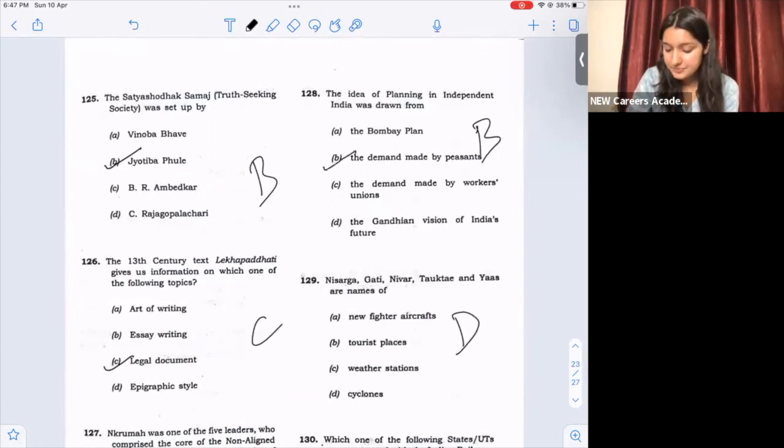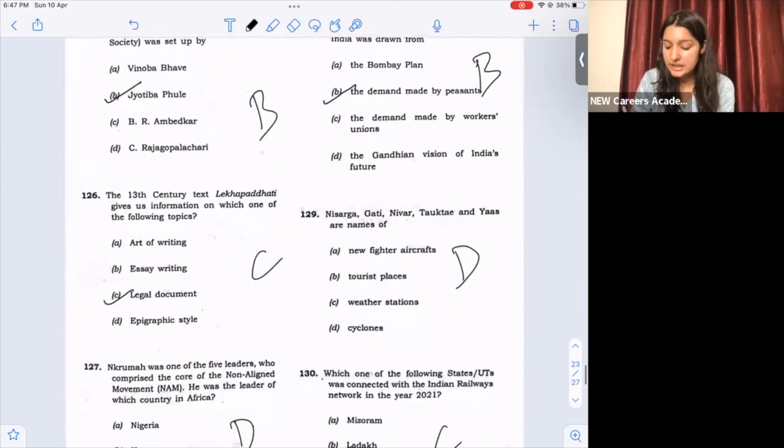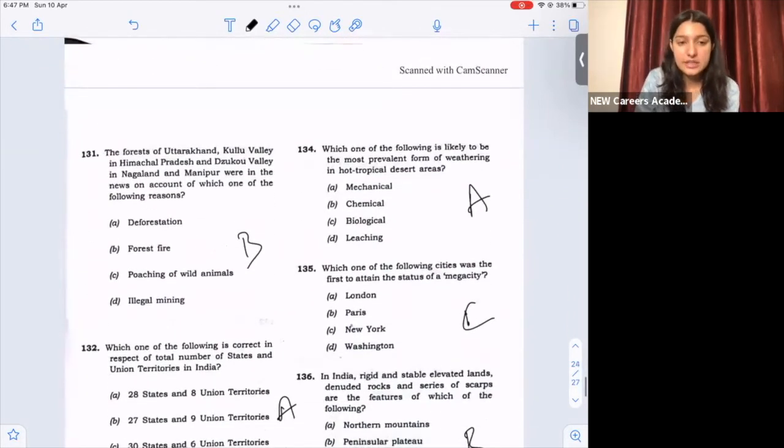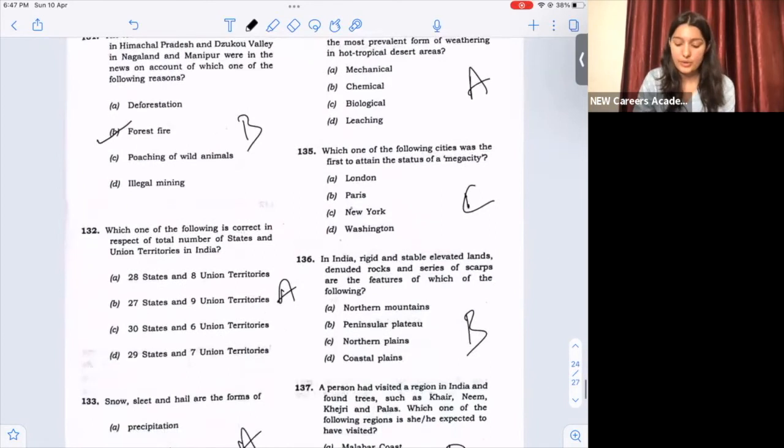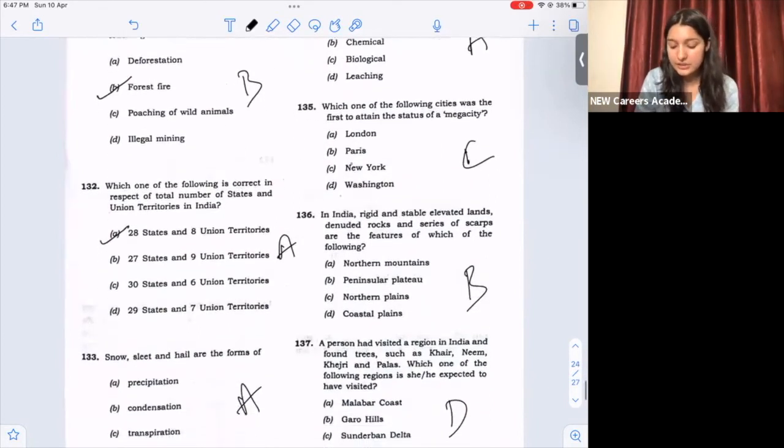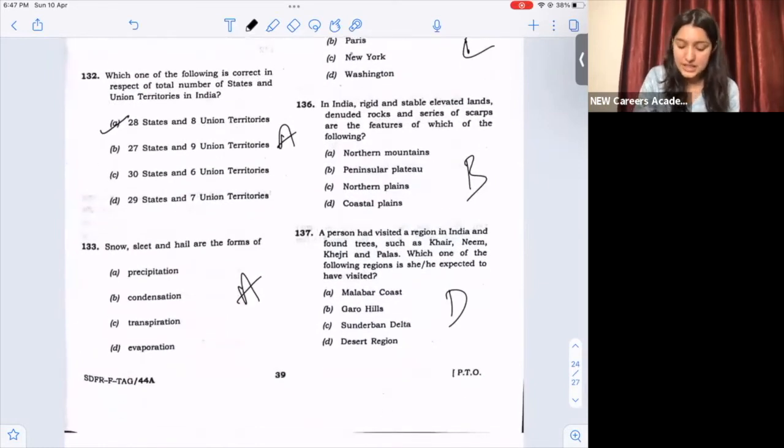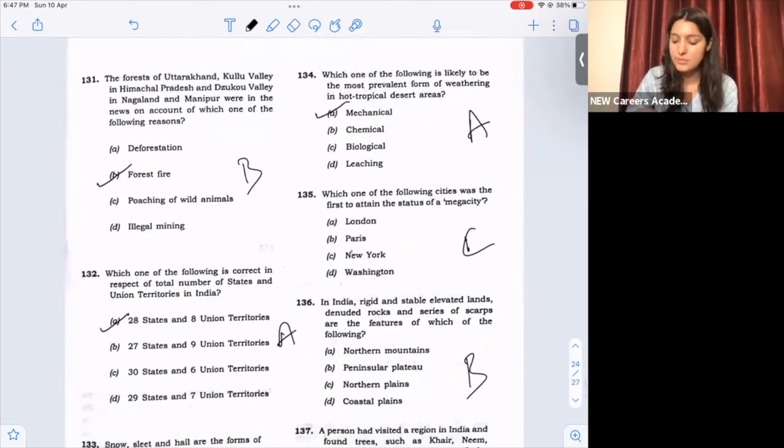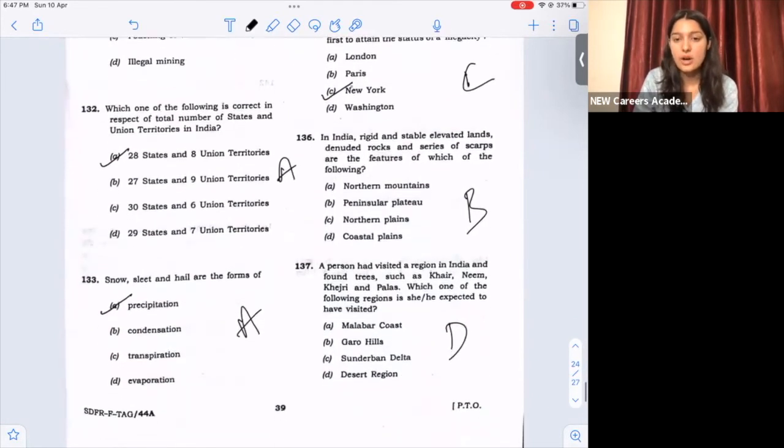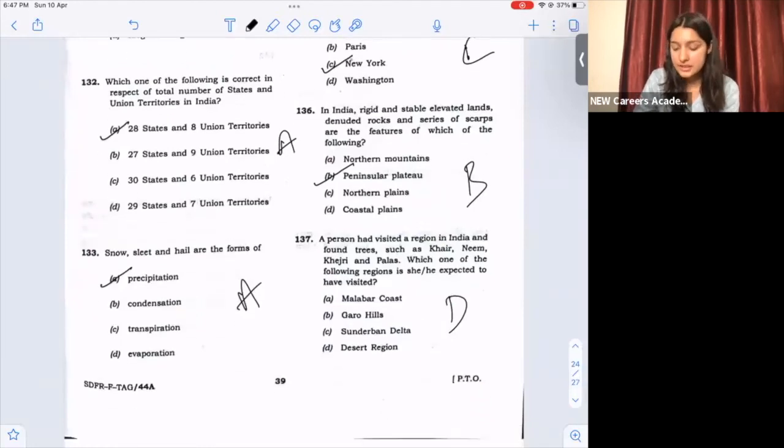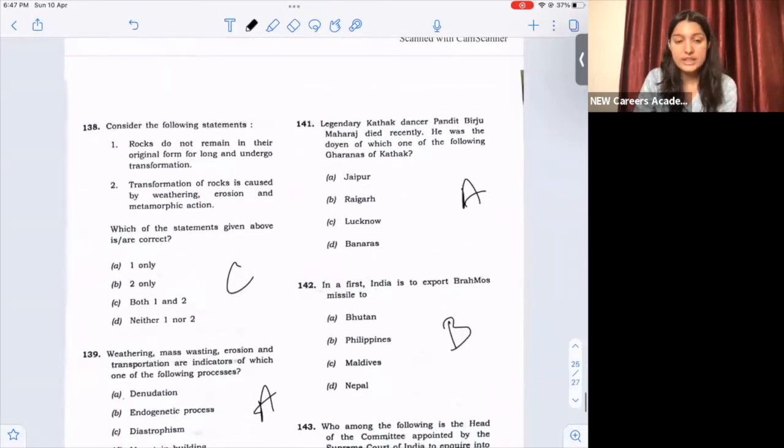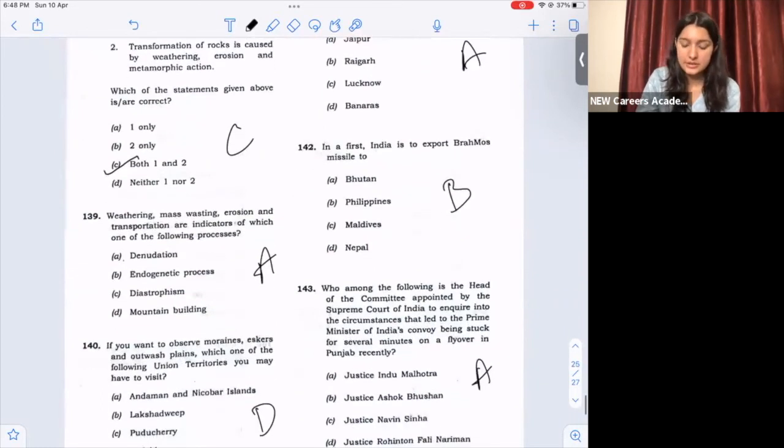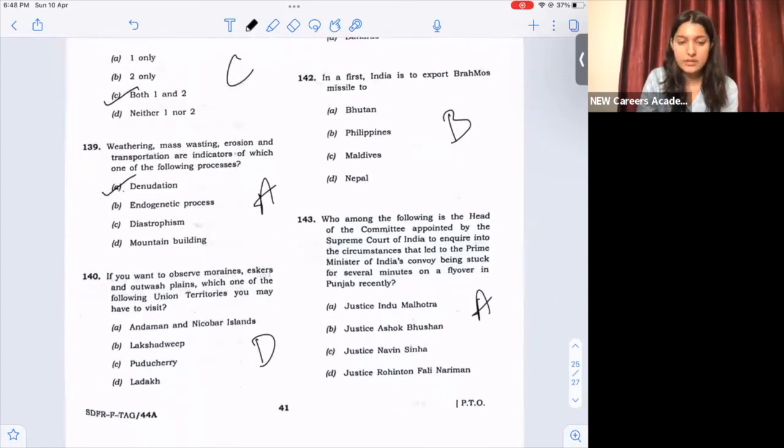130, option C. 131, option B, Forest Fire. 132, option A, 28 state and 8 union territories. 133, option A, precipitation. 134, A, mechanical. 135, option C, New York. 136, option B, Peninsular Plateau. 137, desertification. 138, both 1 and 2, option C. 139, option A, denudation. 140, option D, Ladakh.